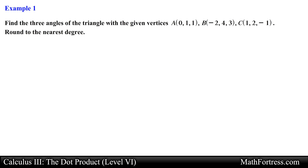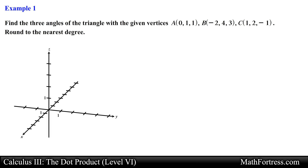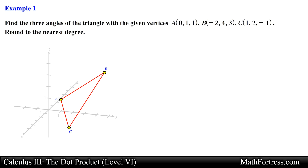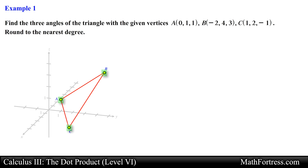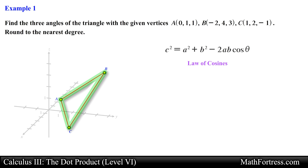Find the three angles of the triangle with the given vertices, round to the nearest degree. Let's start by plotting the points so that we have a diagram to work with. Notice that the three vertices form a triangle. We are asked to find the measurement of all three angles. One way is by finding the length of each side of the triangle and using the law of cosines.